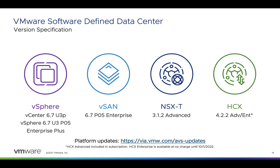Three is the minimum and 16 is the per-cluster maximum. You also get a vCenter Server 6.7 U3P appliance for managing ESXi, vCenter Enterprise, and all your vSphere workloads. You get VMware NSX-T 3.1.2 Advanced for vSphere workload VMs.